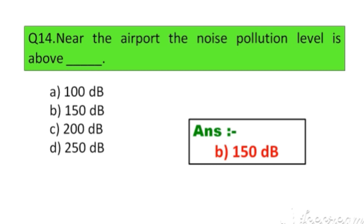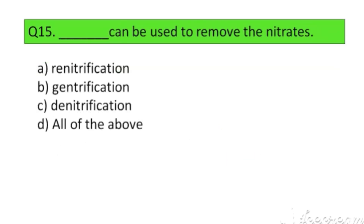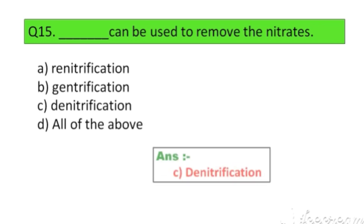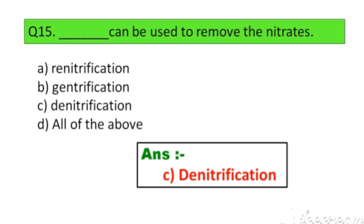Question number 15. Dash can be used to remove the nitrates: Option A. Re-nitrification, B. Gentrification, C. De-nitrification, D. All of the above. The right answer is Option C: De-nitrification.